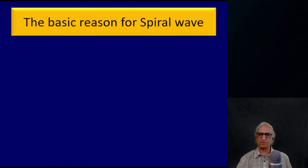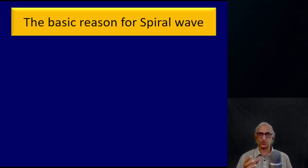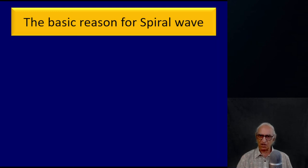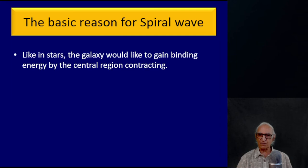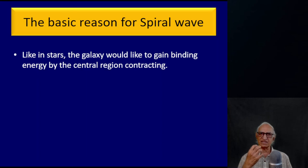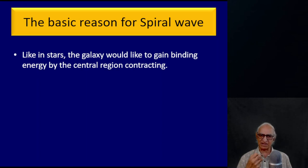Now let us ask: why is there a density wave? What is the basic reason for the gravitational perturbation to arise? Like stars, a galaxy would like to gain binding energy — binding energy is negative, so it wants to be more tightly bound. This it accomplishes by the central region contracting. In stars, the binding energy gained by contraction of the central region, which equals -G M² / r, results in the expansion of the outer layers. This is how stars become giants.